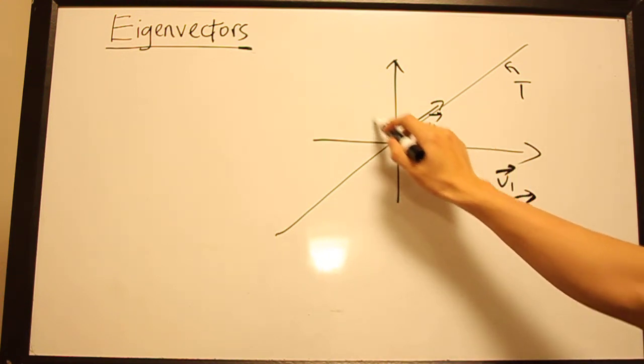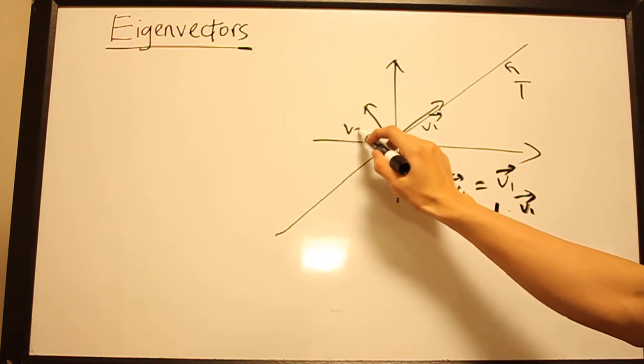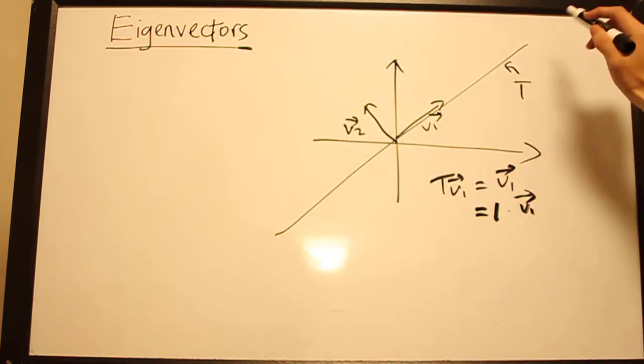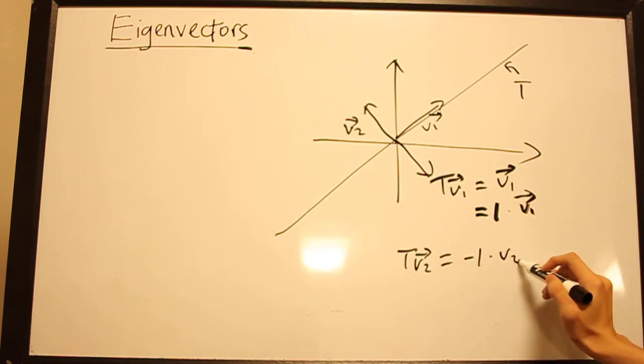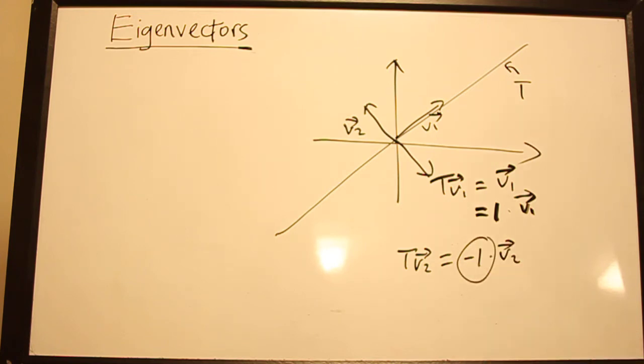And similarly if we define V₂ which is perpendicular to this line, the action of T on V₂ is to reflect it and we can write that T(V₂) equals minus 1 times V₂. So V₂ is an eigenvector of T with eigenvalue minus 1.